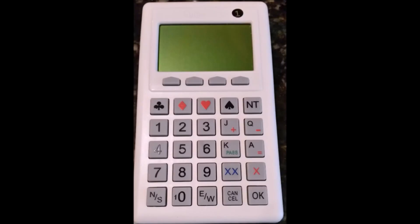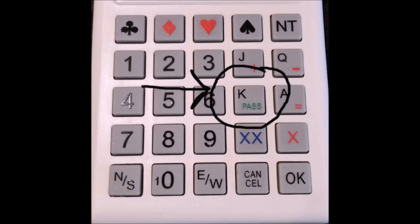There are a couple of things I need to point out about the BridgeMate keyboard. We've talked about how we put in the bid. But what happens if everybody passes? Well, there's a special key on the keyboard for just that situation. It's not easy to see. It's the K key. And you'll notice that in green it says pass. You click this key just as if you were putting in the number of the contract. And it will take you to the next round.